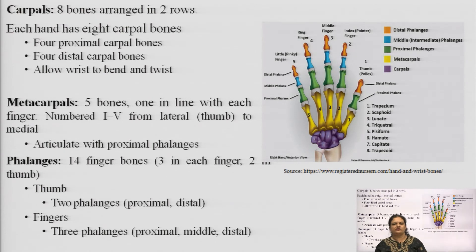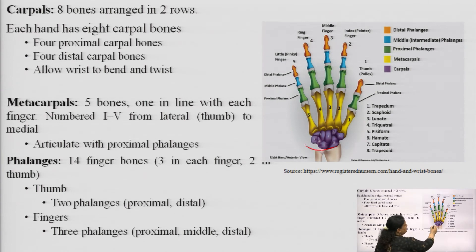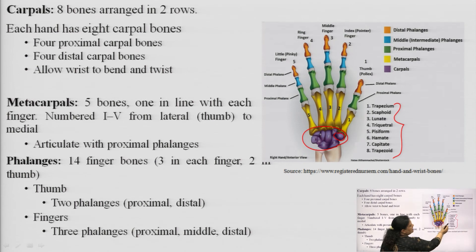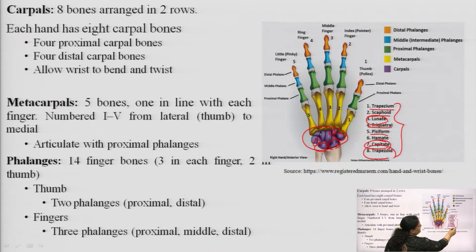Coming to the wrist area, we have the carpals — eight bones arranged in two rows. The eight carpal bones are: trapezium, scaphoid, lunate, triquetral, pisiform, hamate, capitate, and trapezoid. There are four proximal and four distal carpal bones, which allow the wrist to bend and move in various directions — twist, right-left, and back and forth.